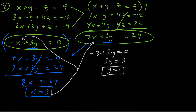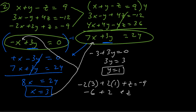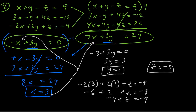Now we've got x and y, so we need to solve for z. Going back to the original three-variable equations, I'll use the bottom equation because it has just one z — no division needed at the end. Substituting x equals 3 and y equals 1: negative 2 times 3 plus 2 times 1 plus z equals negative 9. That's negative 6 plus 2 plus z equals negative 9, so negative 4 plus z equals negative 9. Adding 4 to both sides, z equals negative 5. Final answer in alphabetical order: x equals 3, y equals 1, z equals negative 5.